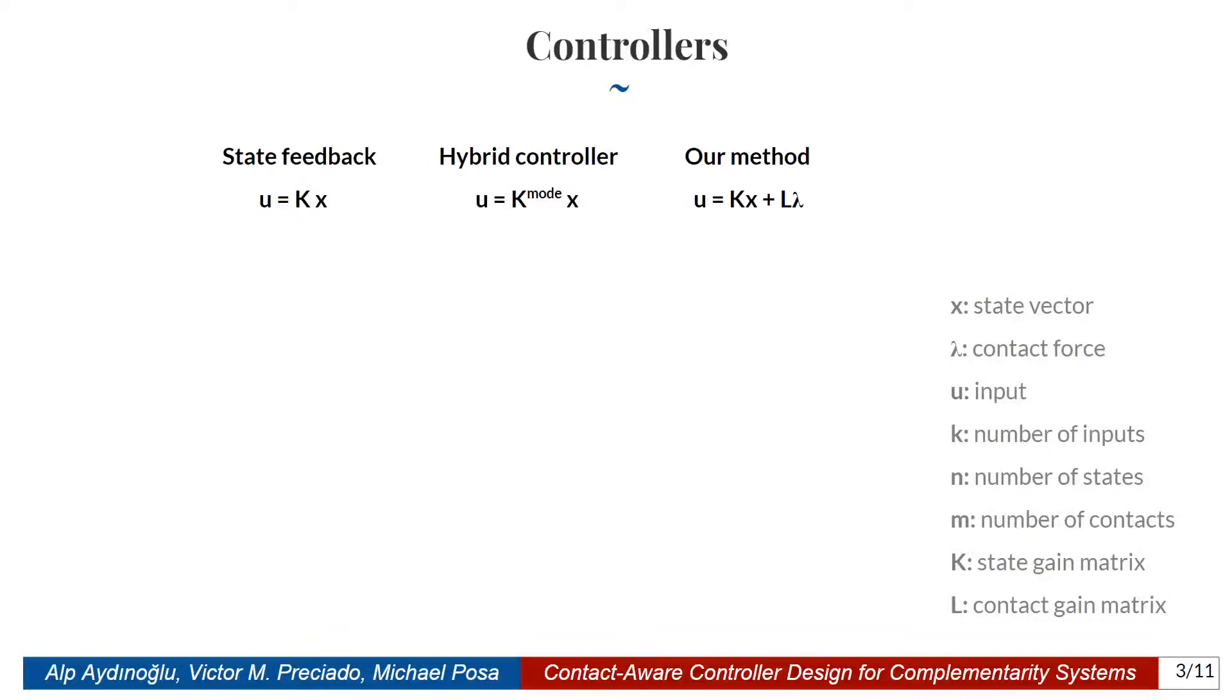Now, let's compare these controllers. The first question we ask is: do we need to determine which mode is active in order to apply the controller? This is called mode detection, and it's known to lead to brittle controller strategies. The only controller which requires mode detection is the hybrid controller. The second question: can we incorporate tactile feedback? Clearly in the state feedback case we cannot incorporate tactile feedback, but in the other two we can. Third, we check the number of controller parameters. In the state feedback case, it has K times N parameters, where K is the number of inputs and N is the number of states. In the hybrid controller case, this number is scaled by 2 to the M, where M is the number of contacts. In our method, it's K times N plus K times M. Here, you can see that the hybrid controller is more expressive since it has more parameters, but as the number of contacts gets higher, it scales exponentially with the number of contacts. So it is computationally much harder to design hybrid controllers.